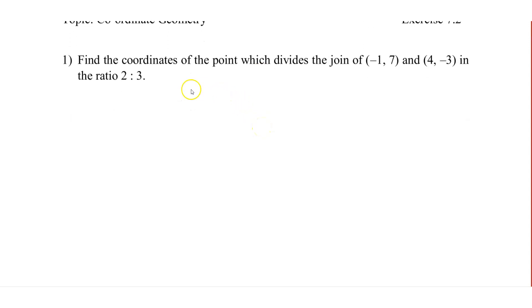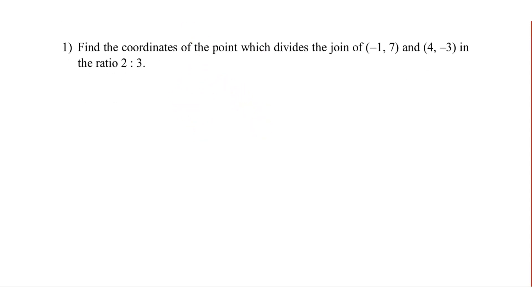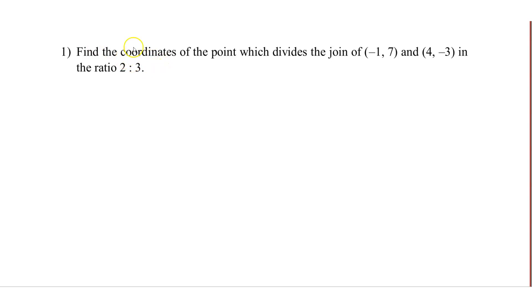Friends, let's look at the first problem. It says: find the coordinates of the point which divides the join of (-1, 7) and (4, 3) in the ratio 2:3.